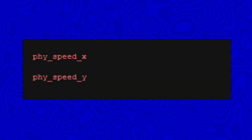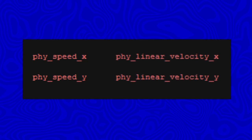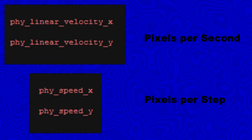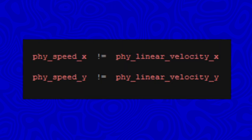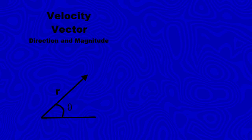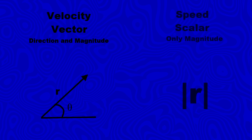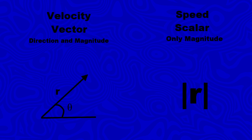Another two variables are phy_speed_x and phy_speed_y. These are very similar to phy_linear_velocity_x and phy_linear_velocity_y — basically the same thing but in different units. phy_linear_velocity_x and phy_linear_velocity_y are in pixels per second, while phy_speed_x and phy_speed_y are in pixels per step. If I had used them in the platformer tutorial, it would have saved a lot of trouble with unit conversion. I'd also like to point out that in physics, the difference between speed and velocity is not simply different units: velocity is a vector indicating both direction and magnitude, while speed is just a magnitude — a scalar with no direction — so you can't have negative speed. GameMaker uses these as a convenient naming scheme, which is different from the physics definition.